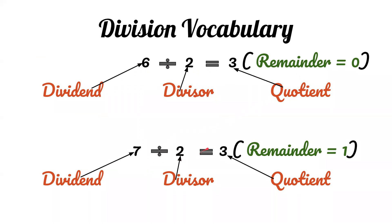7 divided by 2 equals 3. Seven is the dividend, 2 is the divisor, and 3 is the quotient with remainder 1. Because the dividend is not fully divided by the divisor, we get a remainder of 1.